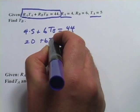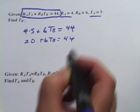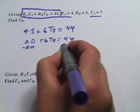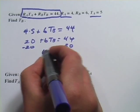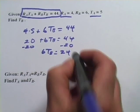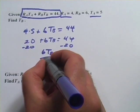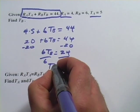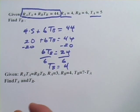Then we have 6 times t sub b equals 44. I'm going to subtract 20 from both sides. That gives me 6 times t sub b equals 24, and I simply divide both sides by 6, and I get t sub b equals 4.